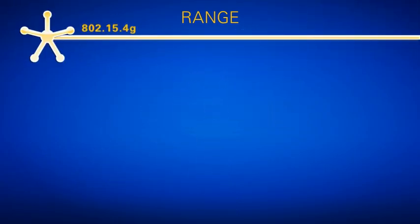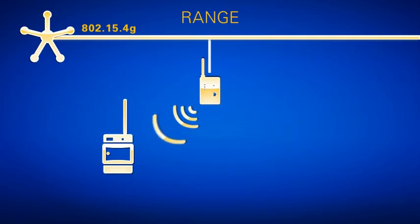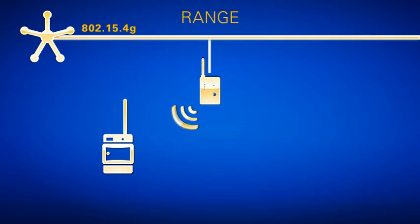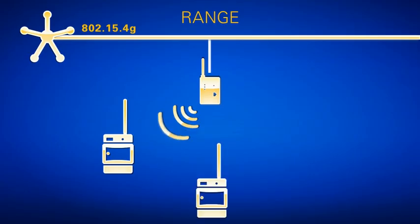By contrast, with 802.15.4, you still use Ethernet, but instead of access points, you use a gateway. This gateway provides connectivity from distributed nodes back to the Ethernet backbone. The nodes have a wireless antenna, and they communicate wirelessly using ZigBee back to the initial gateway. Unlike Wi-Fi, if you want to extend your distance, you can add more nodes without having to extend your gateway. This is known as mesh routing.